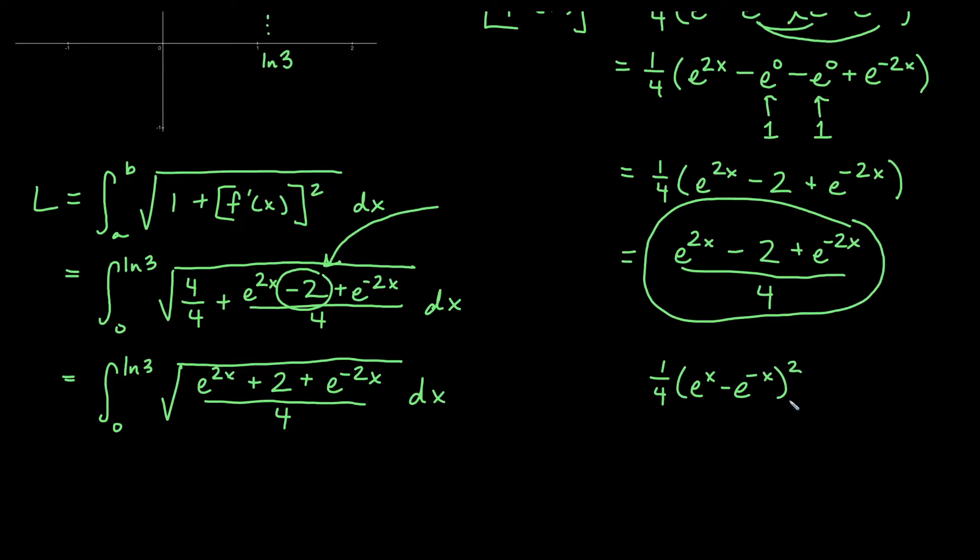So here's the interesting thing. When I change this to plus, this expression actually is 1 4th e to the x plus e to the negative x squared. So the plus 1 has changed the sign of your middle term, left the other terms the same. And when you do that with a perfect square, it basically changes it from a square where you have a difference to a square where you have a sum.